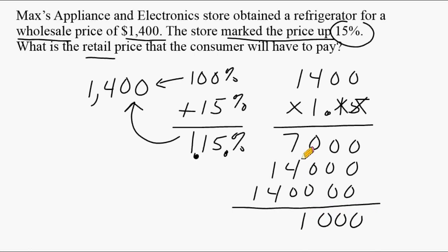We add the columns up: 0, 0, 0, 11, 6, and 1. And we have two numbers after our decimal so we place it right here. So the retail price that a consumer will have to pay for this refrigerator will be $1,610.